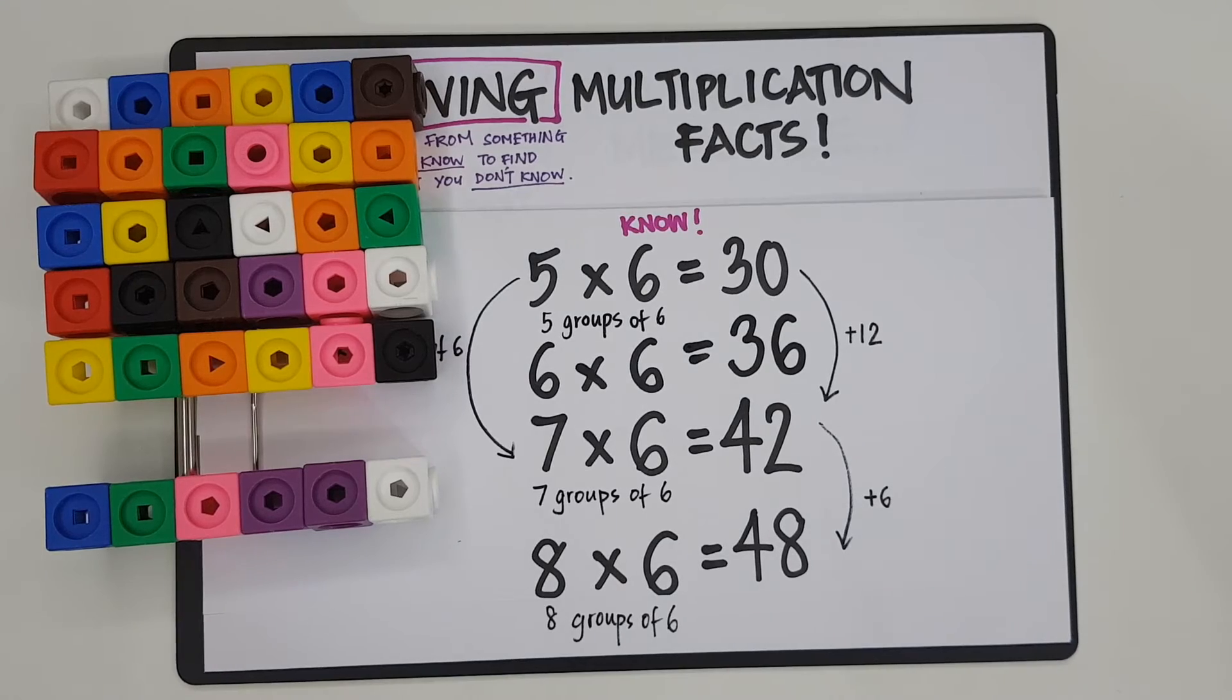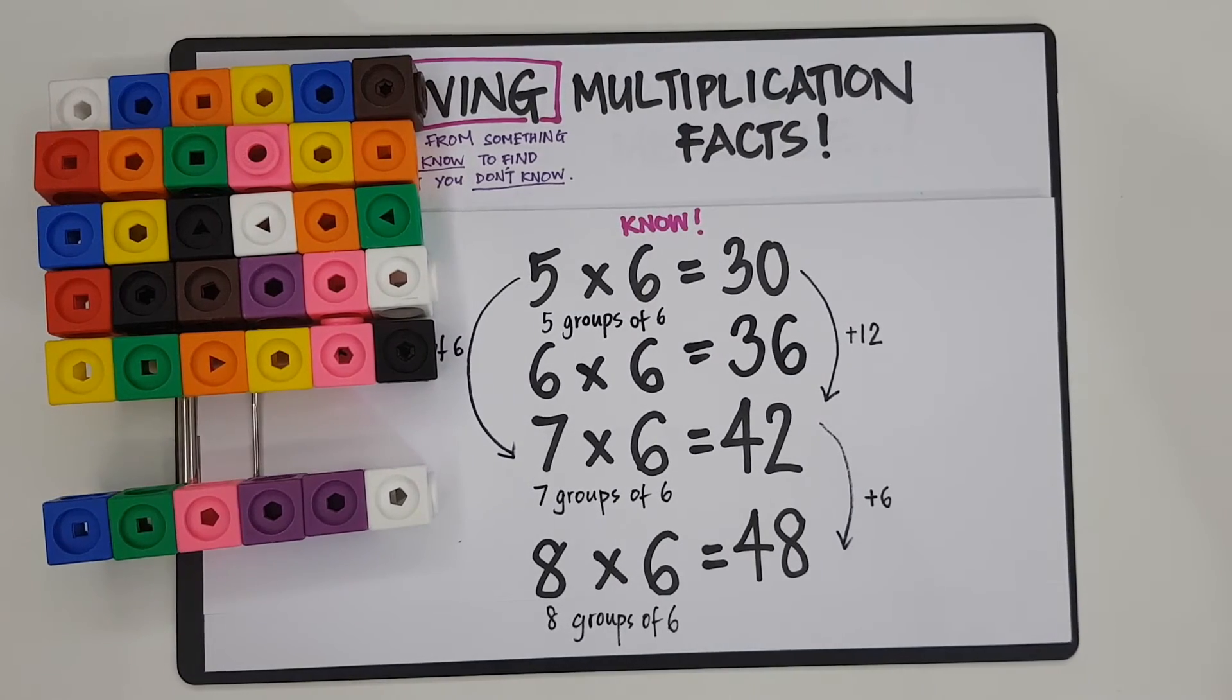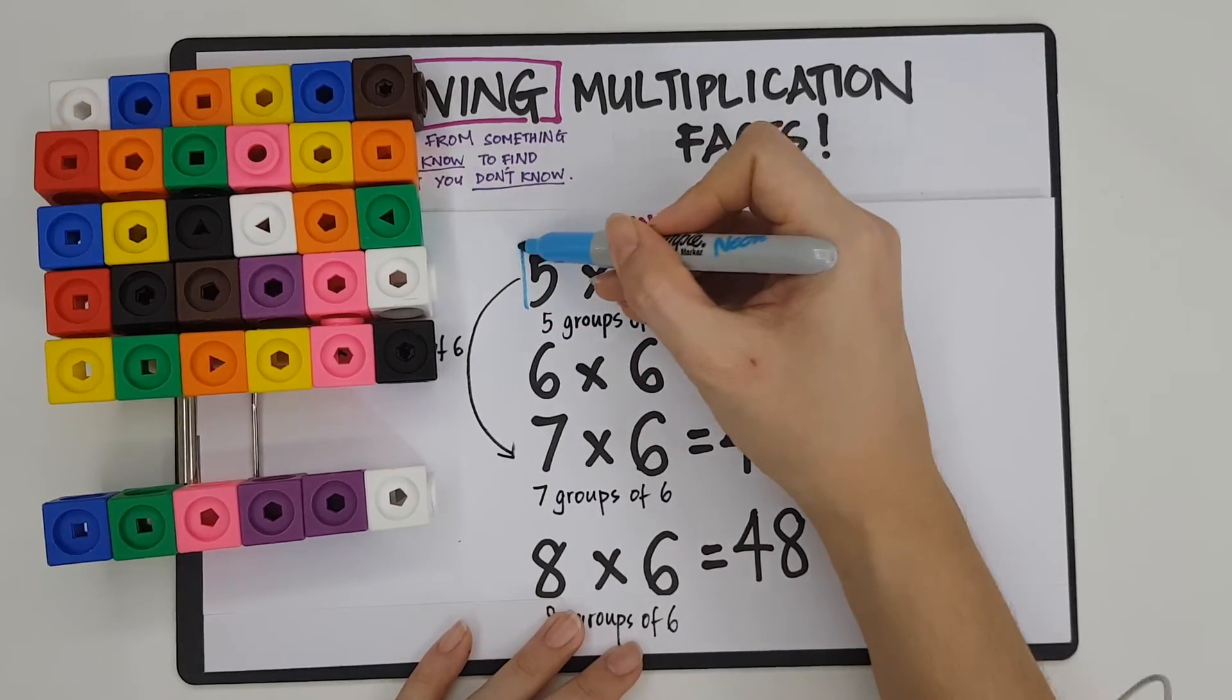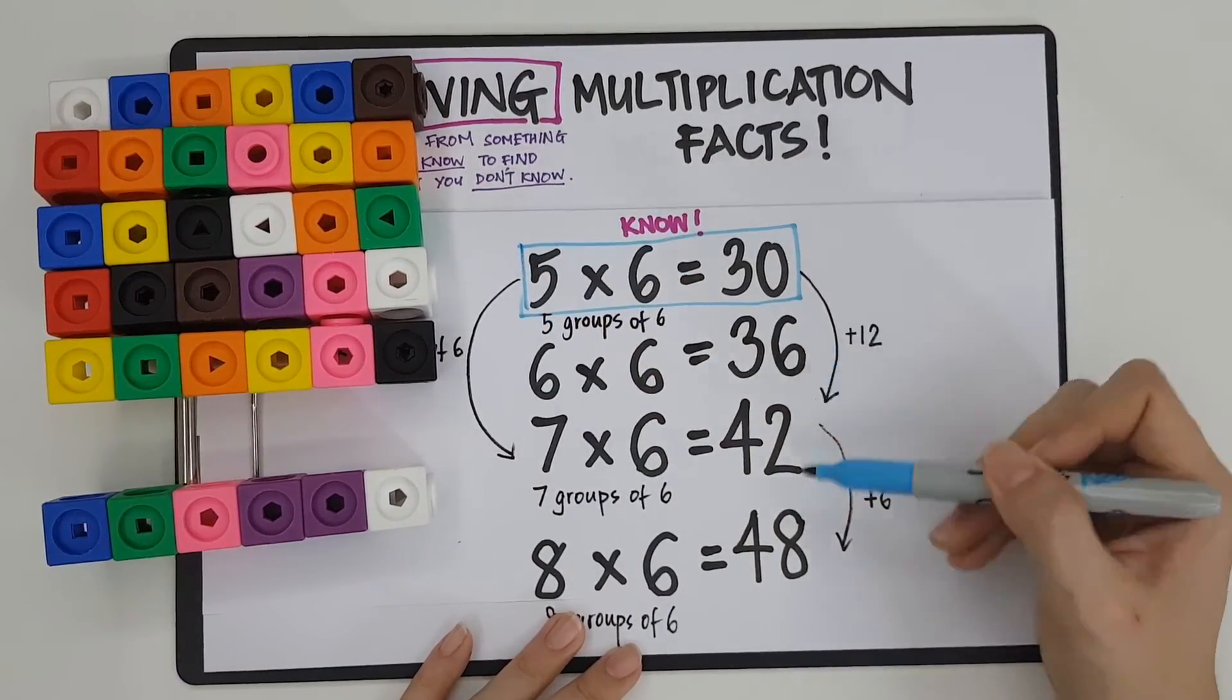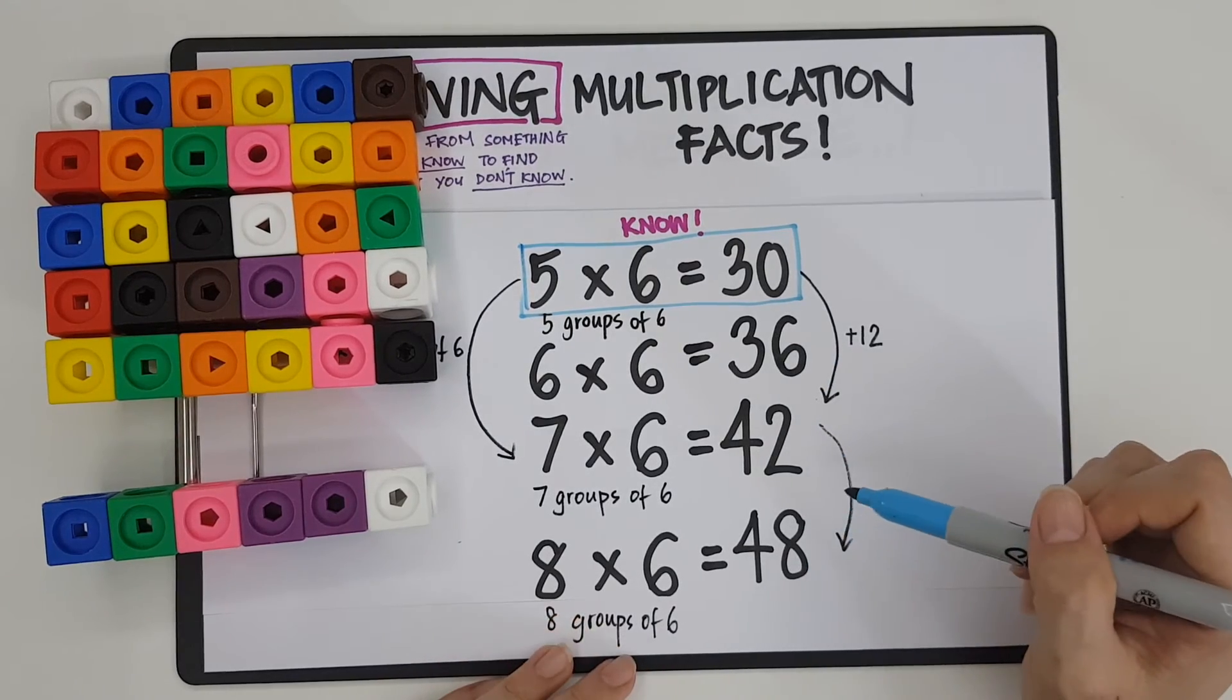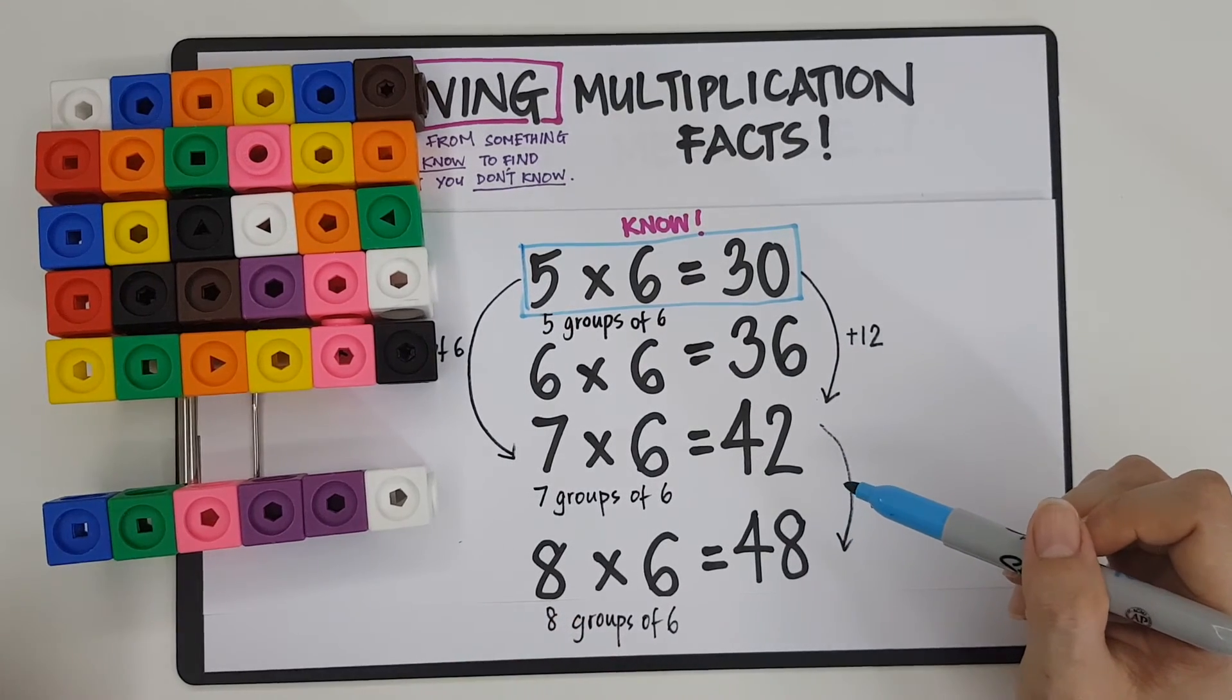So basically guys, all I needed to know was this one multiplication fact, 5 times 6, which I'm sure a lot of you already know. And I can derive these 3 other multiplication facts that was difficult for me to remember.